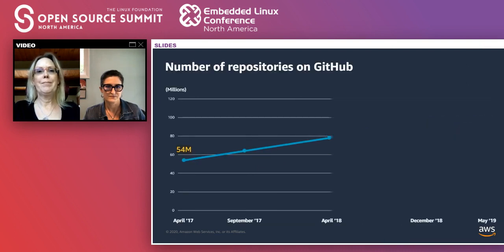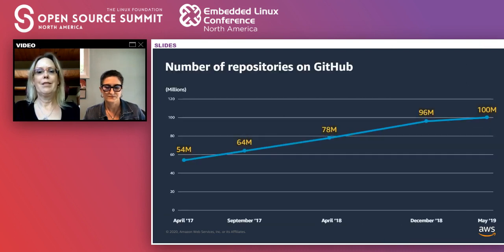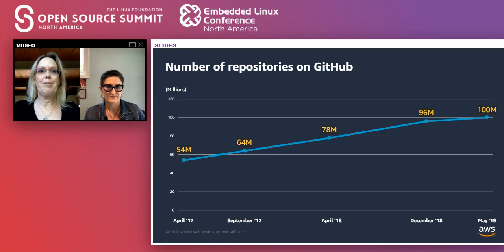Here's why: the open source marketplace is huge and growing. There were already over 100 million projects on GitHub a year ago. How does anyone choose which projects to give their time and effort to? Marketing can help people make those decisions.